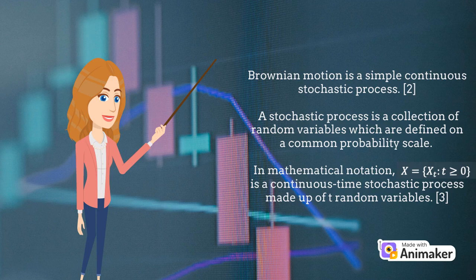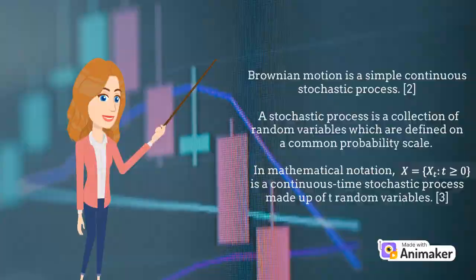Brownian motion is a simple continuous stochastic process, which models random behaviors that evolve over time. A stochastic process is a collection of random variables which are defined on a common probability scale. For example, if x is a random variable at a time t, the collection of these outcomes gives a stochastic process. The mathematical notation on the screen shows the continuous time stochastic process x, made up of t random variables.